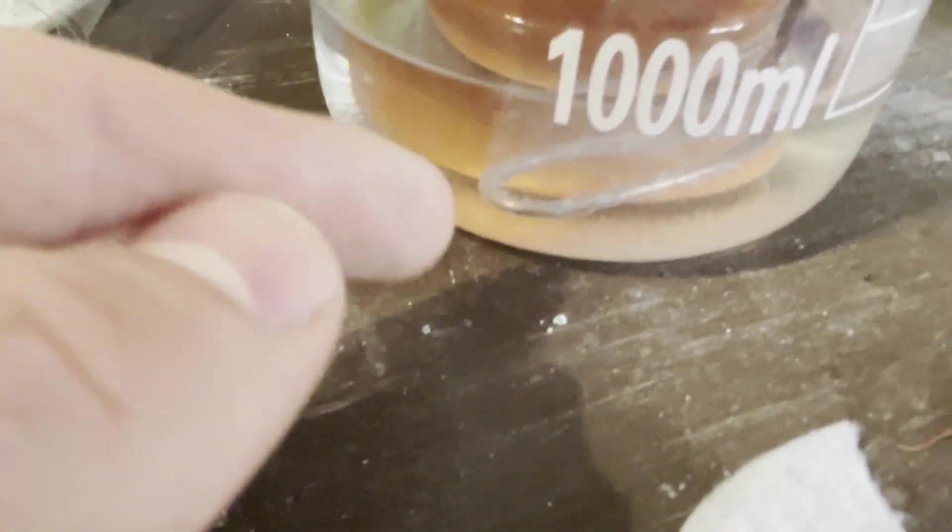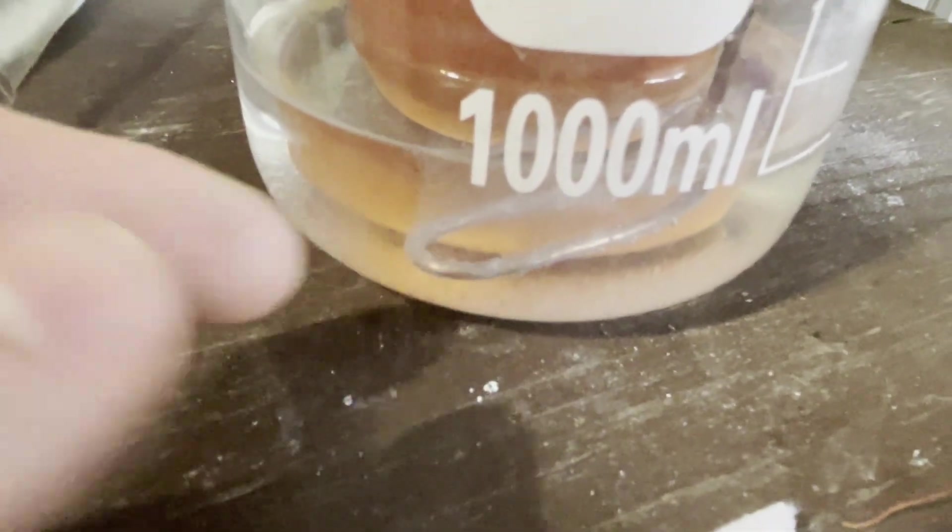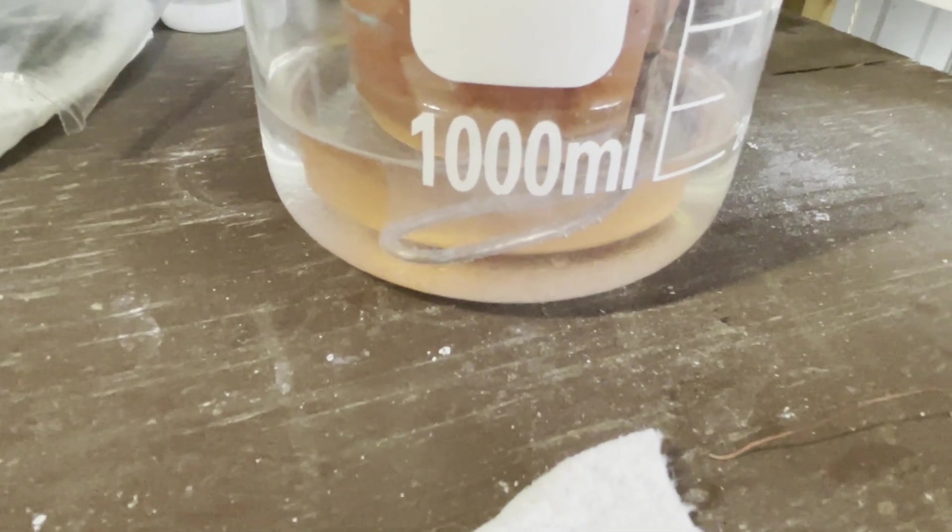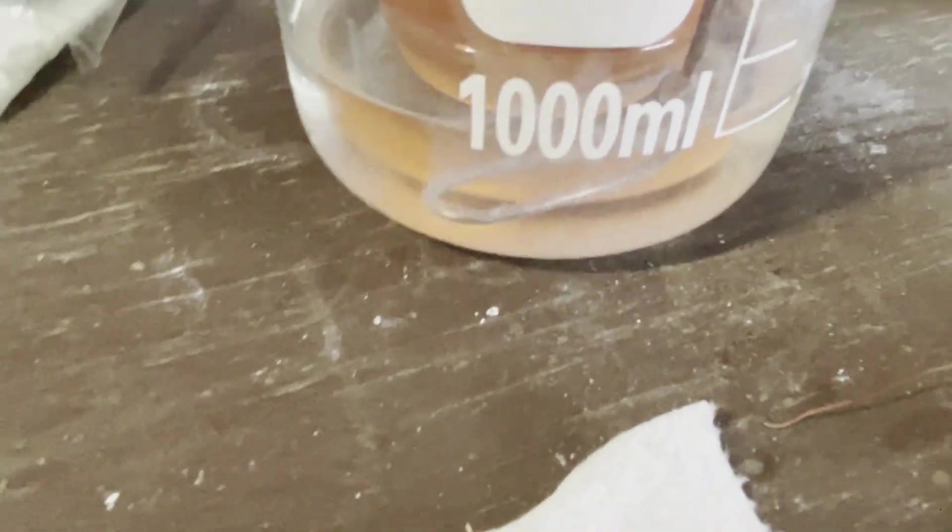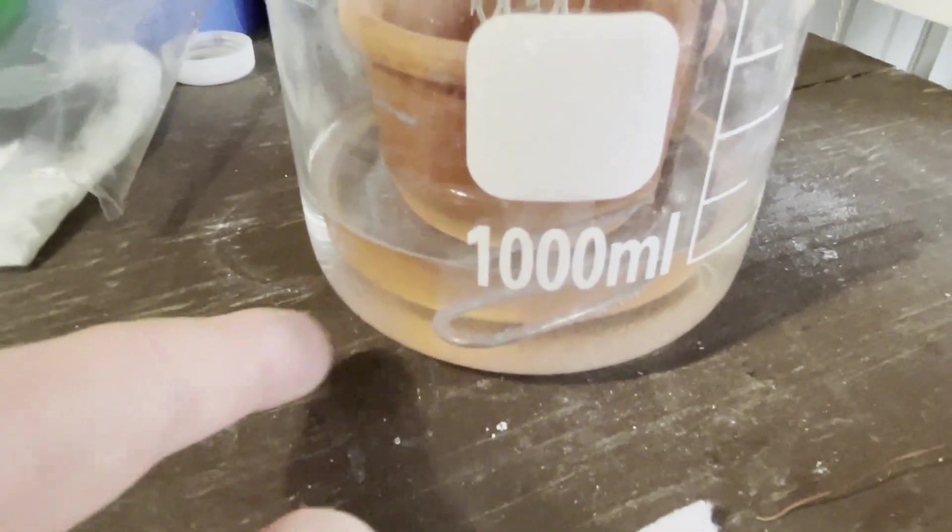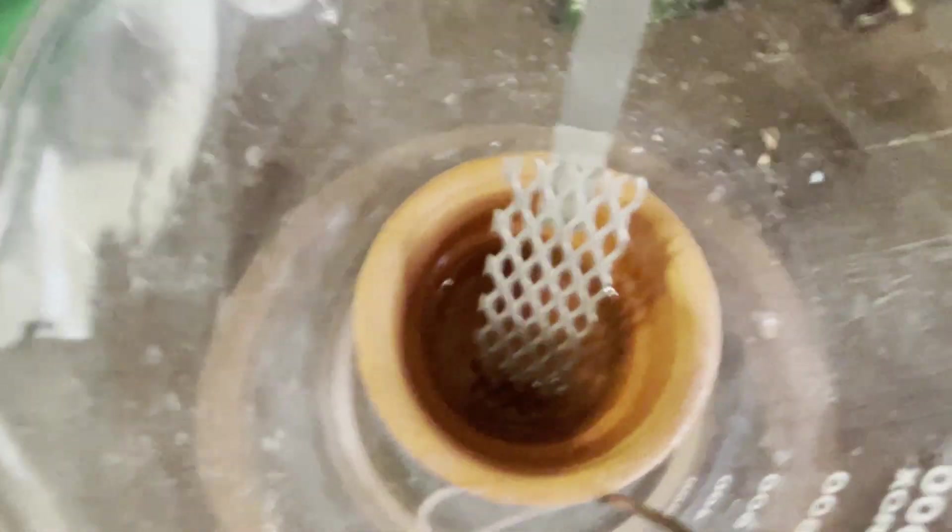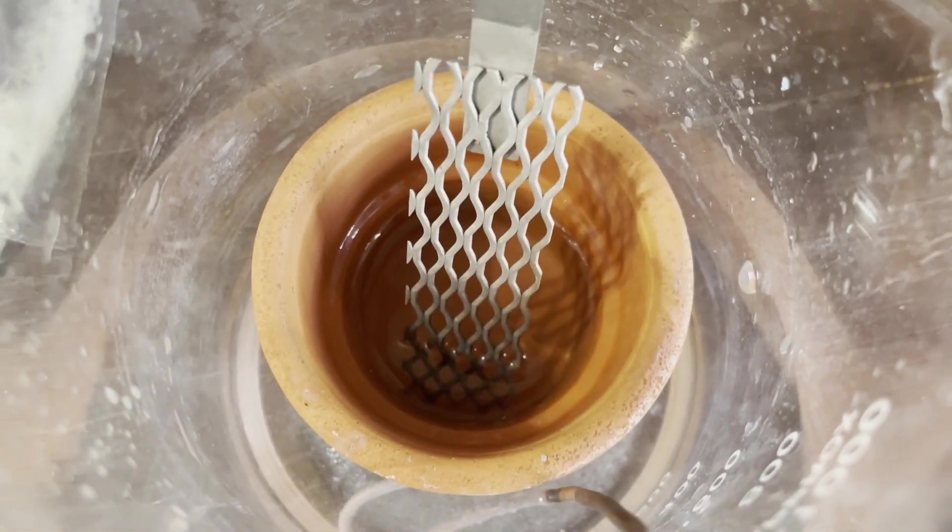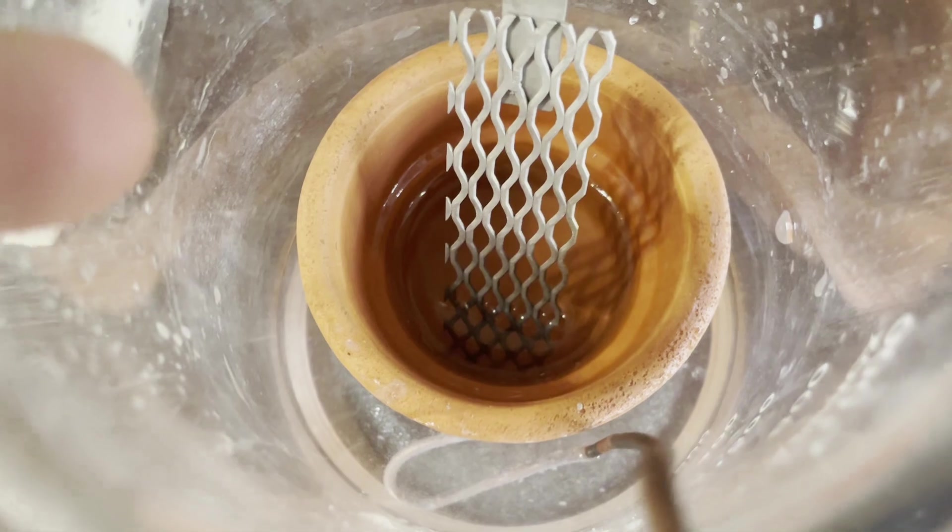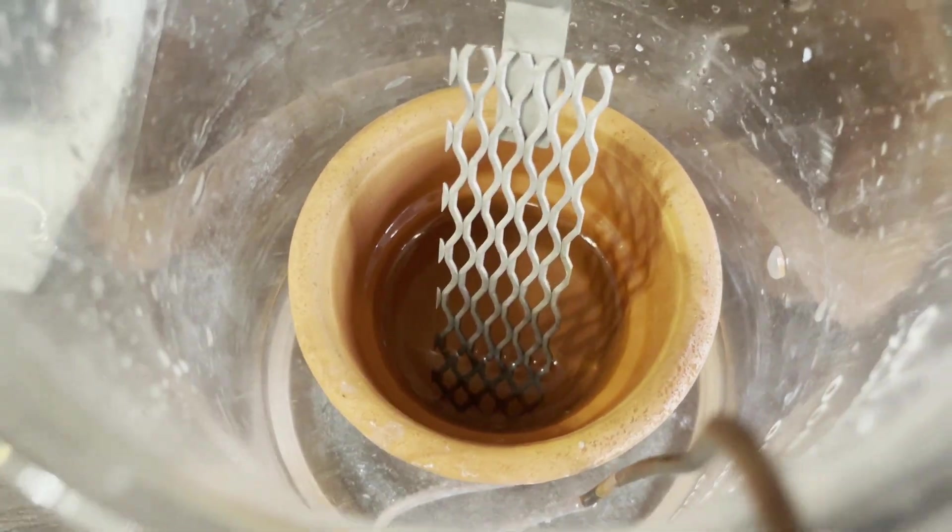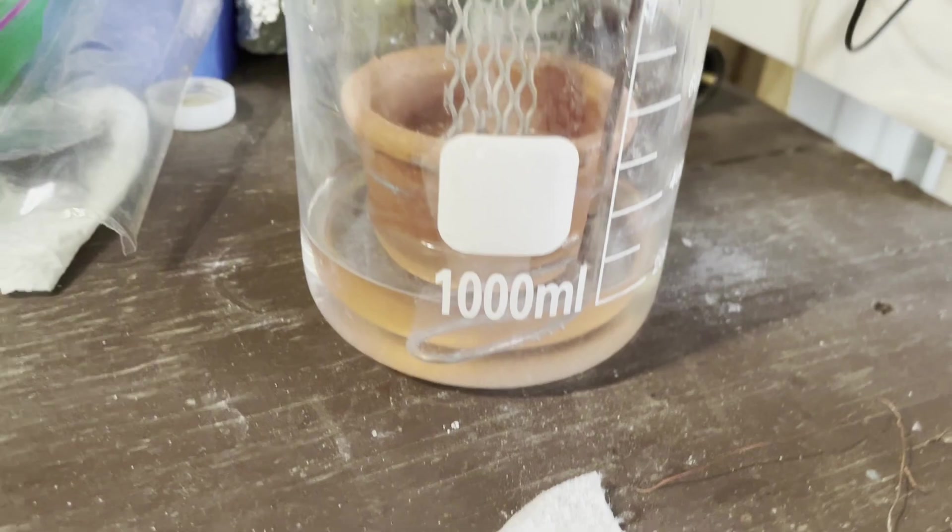And then the magnesium hydroxide is just getting deposited on our electrode. And if we let this run, it will just slowly build up a bunch of magnesium hydroxide here and leave us our sulfuric acid in there. So I'll just let this run, and then I'll be back.